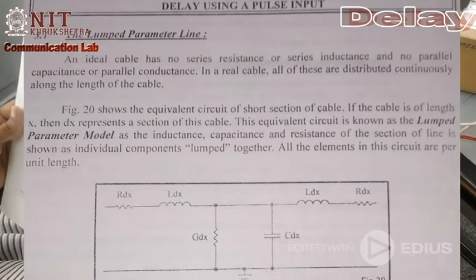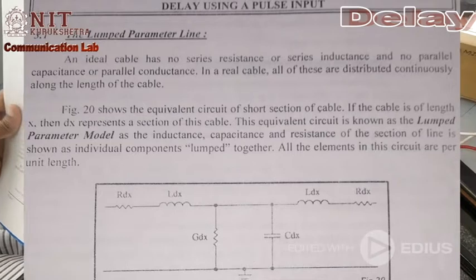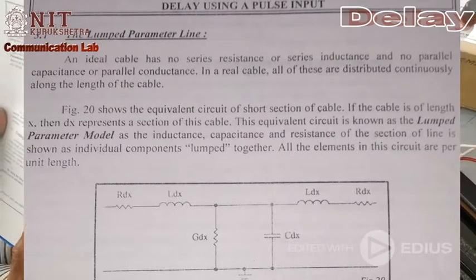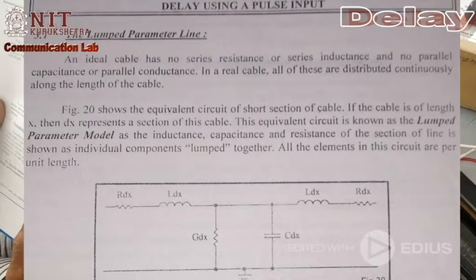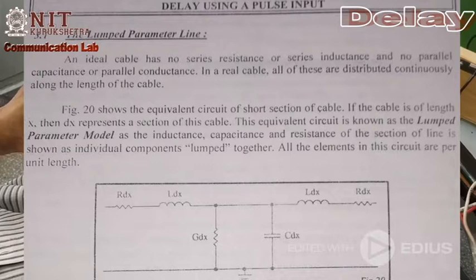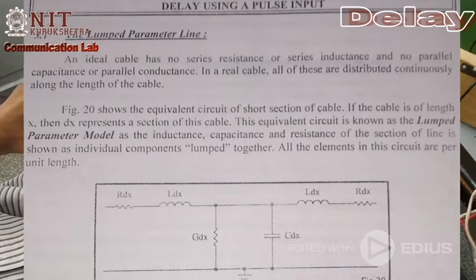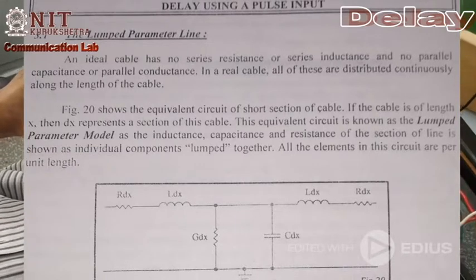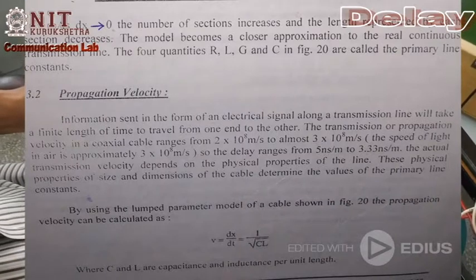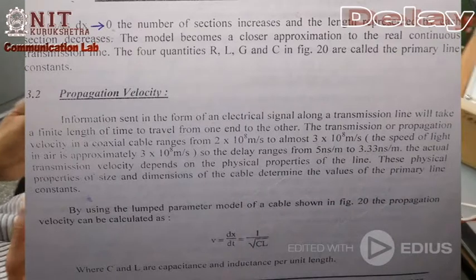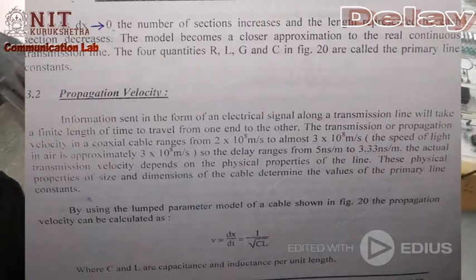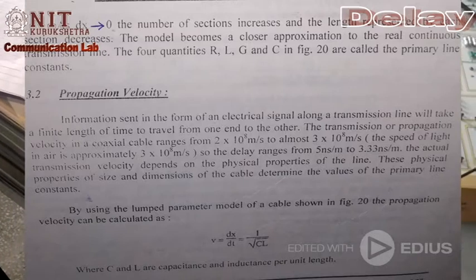We transmit several frequencies — as studied in Fourier analysis, a signal contains several frequency components. When different frequencies are attenuated differently, for instance frequency F1 may have a different attenuation than frequency F2, this distortion is called frequency distortion.